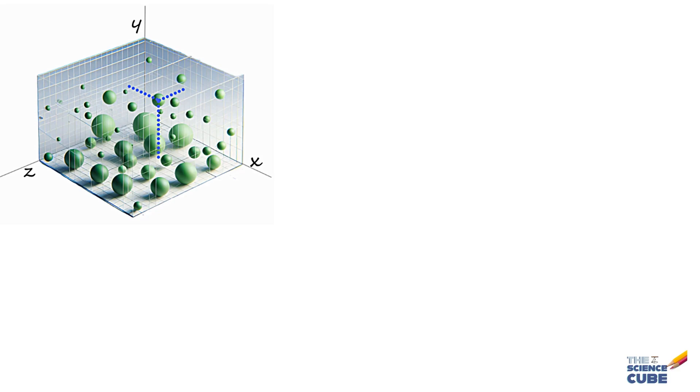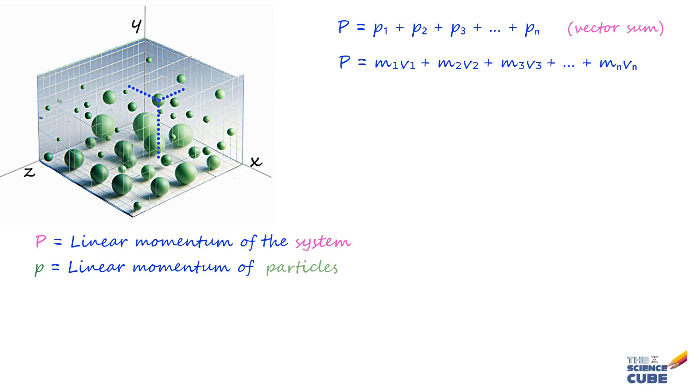Then, the system in its entirety has a total linear momentum P, which can be written as the vector sum of the individual particle's linear momentum. Capital P equals P₁ + P₂ + P₃ and so on till the last particle Pₙ, which therefore equals M₁V₁ + M₂V₂ + M₃V₃ and so on.